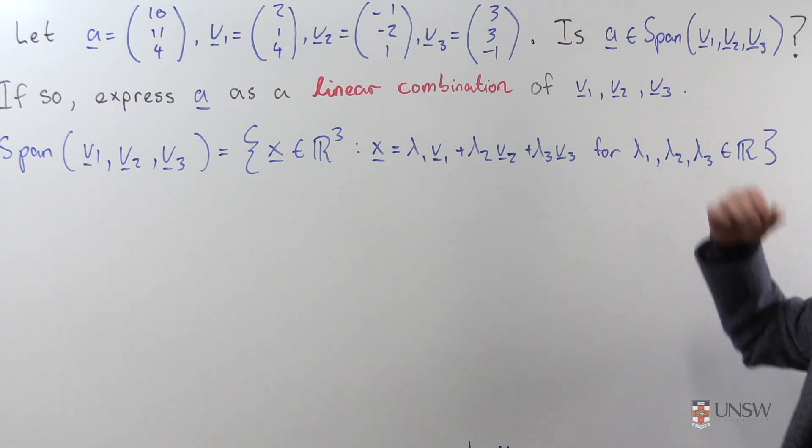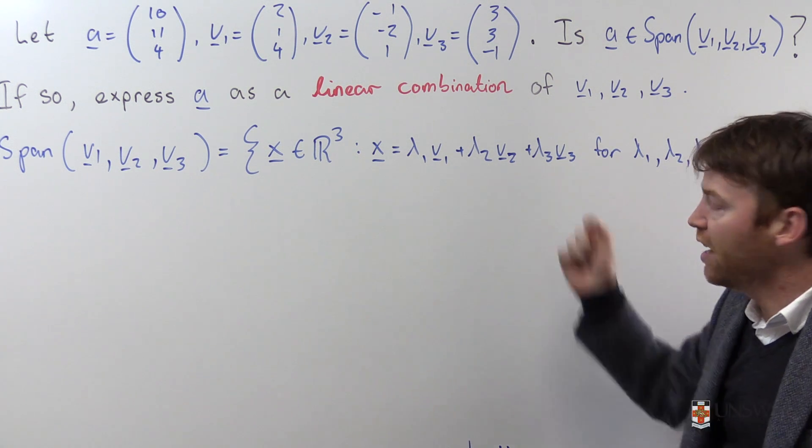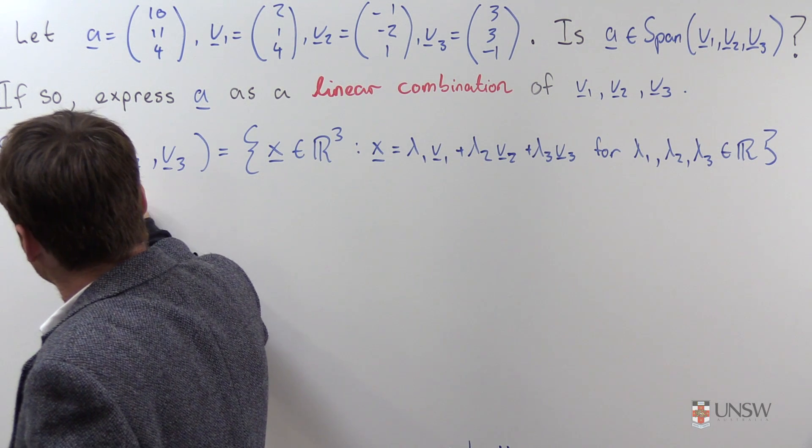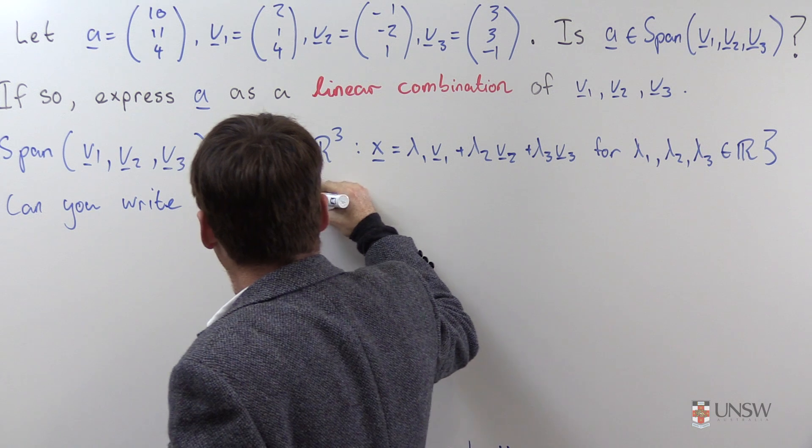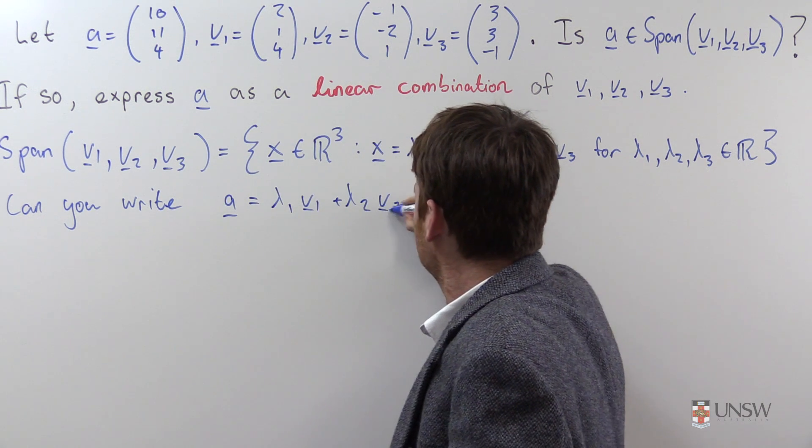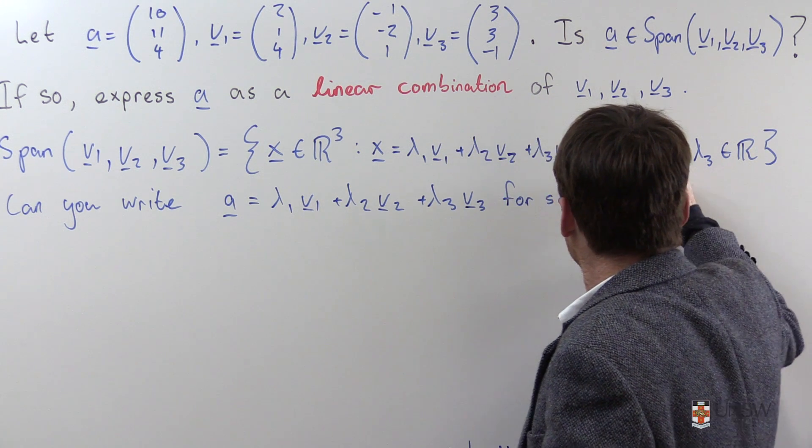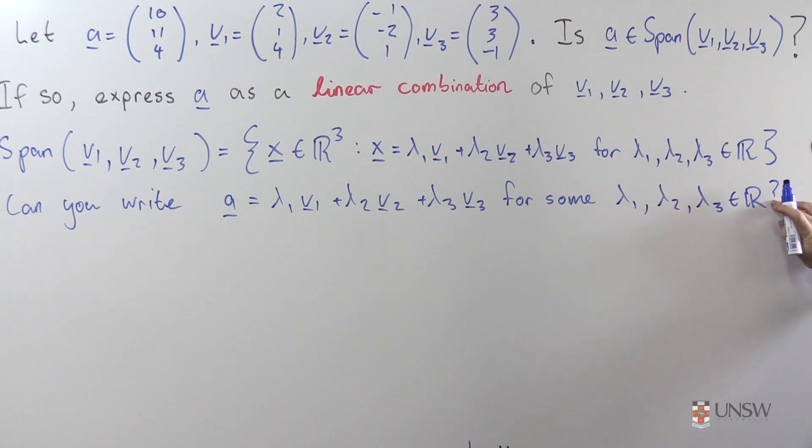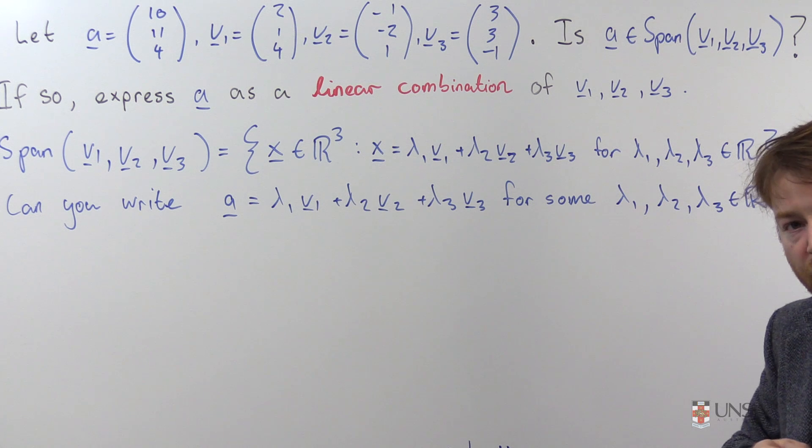So if we want to know if a is in this span, what we're really asking is can you represent a as a linear combination of these vectors? That's what the first part of this question is about. For the second part you're actually asked to find those lambdas. Good, let us proceed.